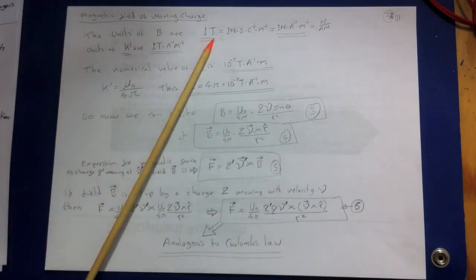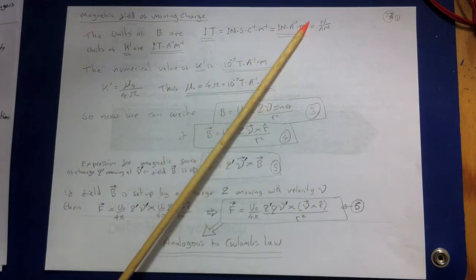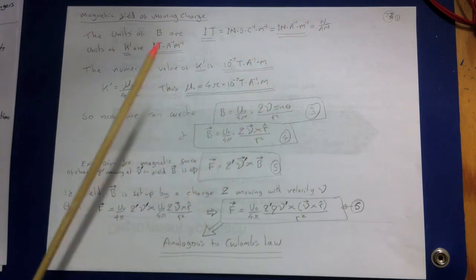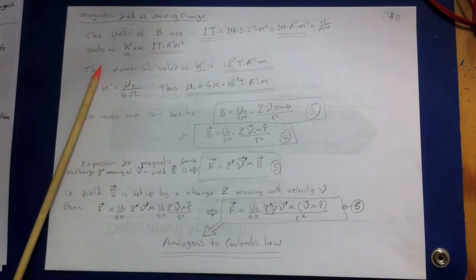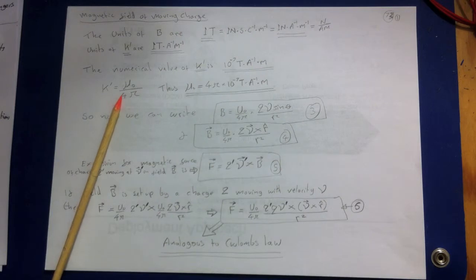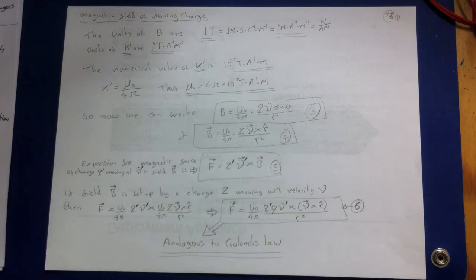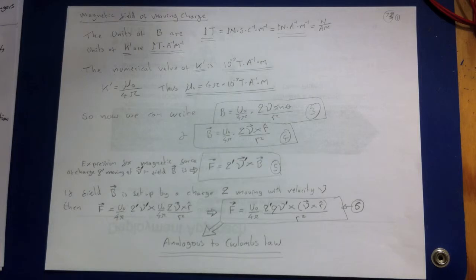The units of the magnetic field B are the tesla, where one tesla equals one newton-second per coulomb per meter, which reduces to newton per amp-meter. The proportionality constant k-dash has units of tesla per amp-meter, with a numerical value of exactly 10 to the minus 7 teslas per amp-meter. Analogous to expressing electric field relations using epsilon-nought, in magnetic field relations we introduce the constant mu-nought, defined by k-dash equals mu-nought over four pi, giving mu-nought equals four pi times 10 to the minus 7 teslas per amp-meter.